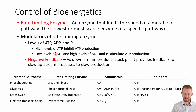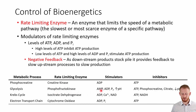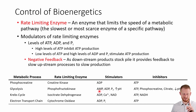For the phosphocreatine pathway, the rate-limiting enzyme is creatine kinase, which is actually the only enzyme in that pathway. It's going to be stimulated by ADP and inhibited by ATP. For glycolysis, the rate-limiting enzyme is phosphofructokinase, and it's going to be stimulated by AMP — also a breakdown product of ATP — as well as ADP, inorganic phosphate, or a high pH. Inhibitors are ATP, phosphocreatine, citrate, and low pH.